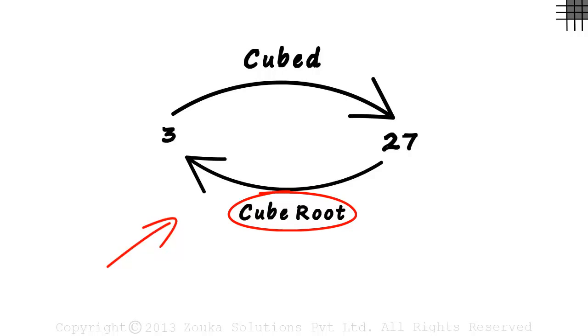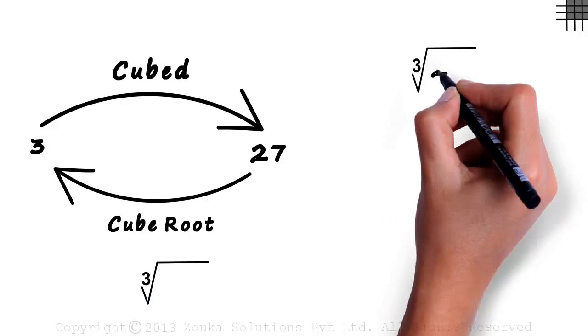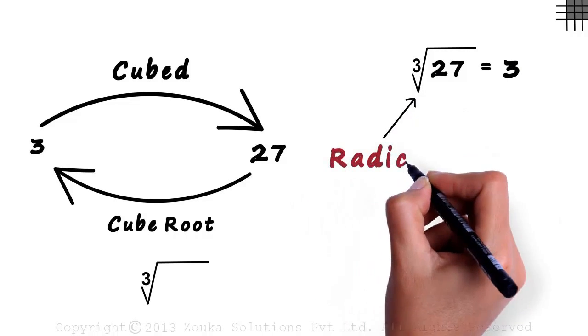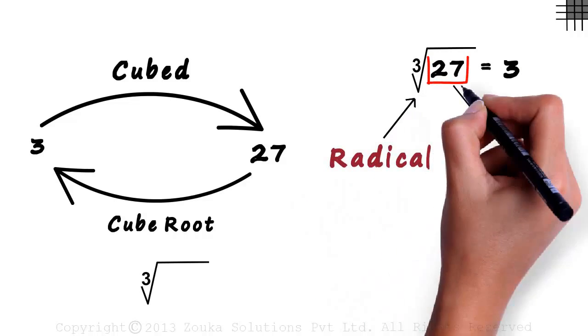Remember, 3 cubed is 27 and cube root of 27 is 3. This is how the symbol of a cube root looks like: a root sign with a 3 here. So we can say that the cube root of 27 is 3. As we saw in the square root video, this root sign is called the radical and the number inside it is called the radicand or the base.